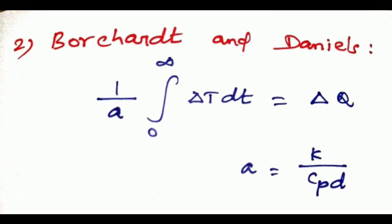Here a is the constant, that is k by cp times d, where d is density, k is thermal conductivity, and m is a constant value.